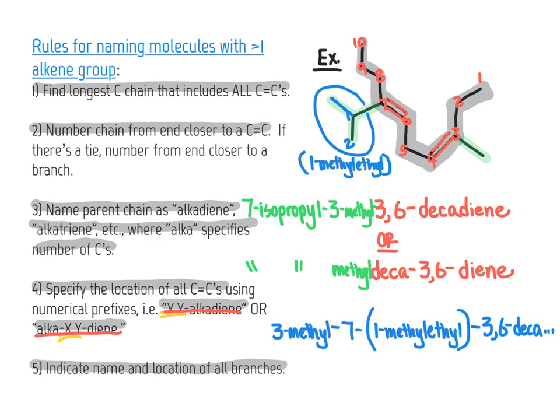This is how we name molecules that have multiple alkene groups — dienes, trienes, tetraenes, or polyenes. In the next segment we'll look at additional examples of naming alkenes and dienes, and we'll start examining the stereochemistry of these molecules and how to specify that within the molecular name. Stay tuned for that in the next segment.